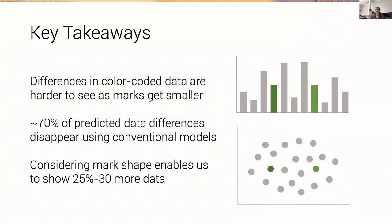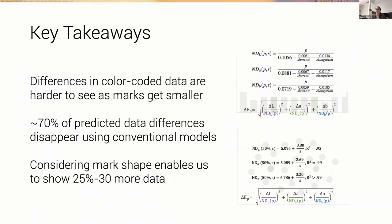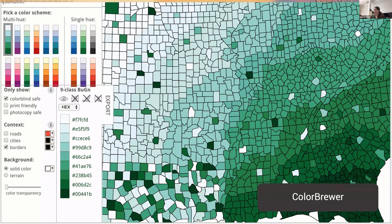But these differences are not subtle. They're actually quite dramatic. If we compare to our traditional visualization metrics, 70% of our predicted data differences don't actually pan out. People can't see them. But if we tailor our models to the kinds of marks we have, we can gain back about 30% of that encoding space. We can compute normalizing constants and plug these into our Euclidean distance formulation to predict with a very high degree of precision how well people will discern color-coded data.